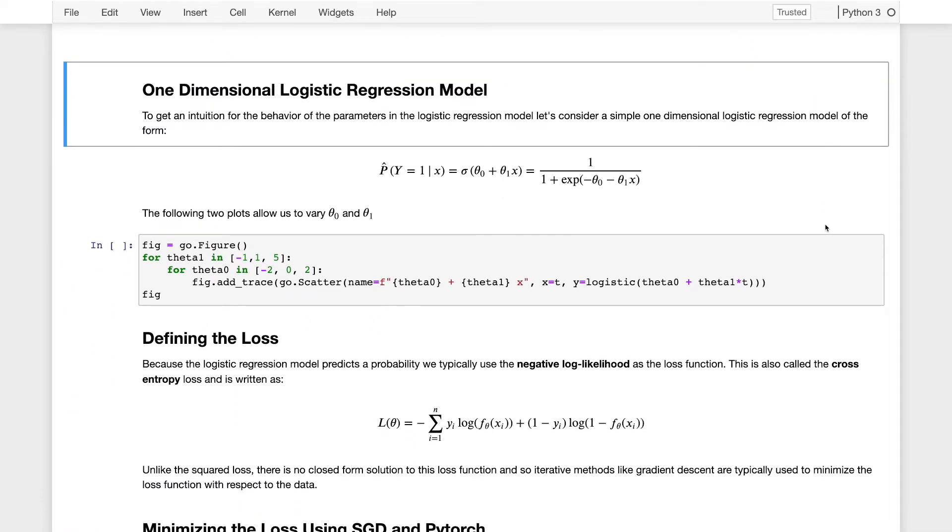To get a better understanding of the logistic regression model, I want to work through a simple one feature dimension example where we're using a linear model. The linear component of this model has just two parameters, a theta zero, which is corresponding to our original constant or intercept term, and a theta one, which is our original slope term in the linear model. Remember, we're still passing this to the nonlinear logistic or sigmoid function.